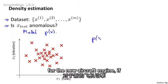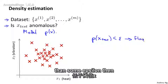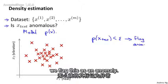And so having built a model of the probability of X, we're then going to say that if for the new aircraft engine, if P of X test is less than some epsilon, then we flag this as an anomaly.